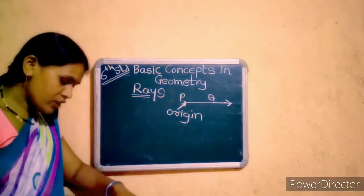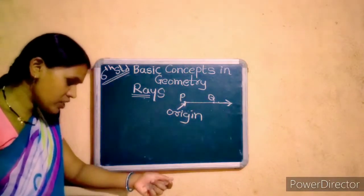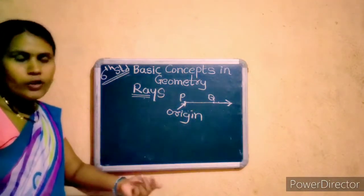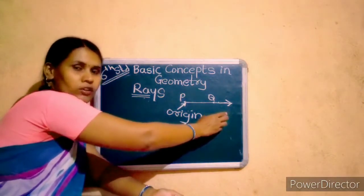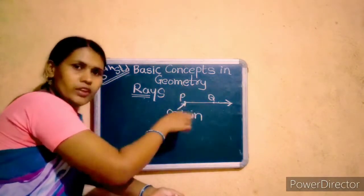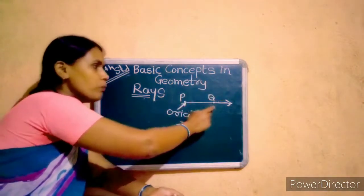An arrowhead is drawn to show that the ray is infinite in the direction of Q.